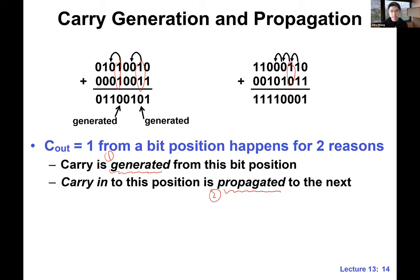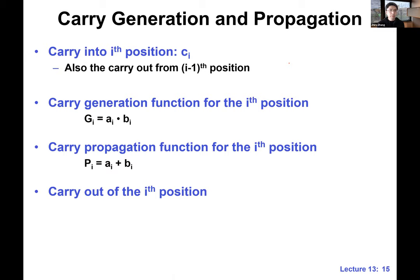This is hopefully intuitive and straightforward. We want to break it down to see why this is useful. There are only two scenarios — we either generate a carry or we propagate. Of course, some carry gets killed — you can have both zeros for both inputs. Given this, we can define the so-called carry generation function and carry propagation function.